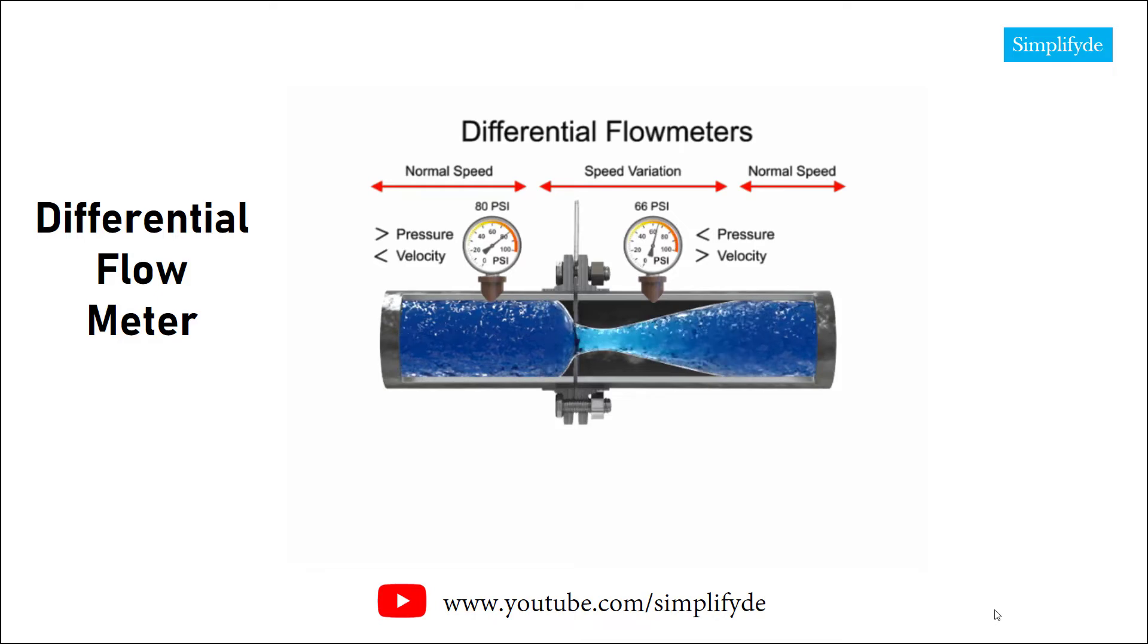The pressure of the fluid at the downstream side of the orifice plate is less than the incoming side due to the accelerated flow. With a known differential pressure and velocity of the fluid, the volumetric flow rate can be determined.